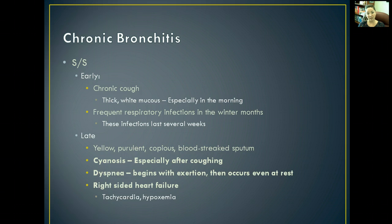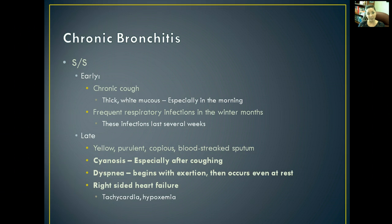In later stages, you'll start seeing yellow, purulent, copious, sometimes blood-streaked sputum. Tests for tuberculosis will typically be ordered at this point, though it may just be a sign or symptom of chronic bronchitis. You might notice cyanosis, especially after prolonged coughing. Dyspnea often begins with exertion and then even occurs at rest. You may also notice right-sided heart failure signs: tachycardia, hypoxemia, jugular vein distension, and generalized swelling within the body.